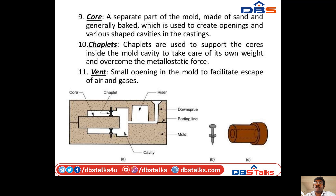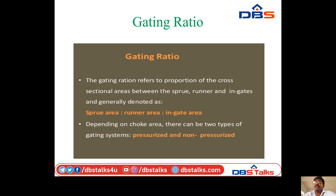In the diagram, the top part shows the core, and the bottom is the drag. The two strips are chaplets. The white line is the cavity, and the runner is also visible. The middle line is the parting line. Vent: a vent is an opening in the mold to facilitate escape of air and gases. Gating ratio refers to the proportion of cross-sectional areas between the sprue, runner, and gate — generally denoted as sprue area : runner area : gate area. It depends on the choke area.